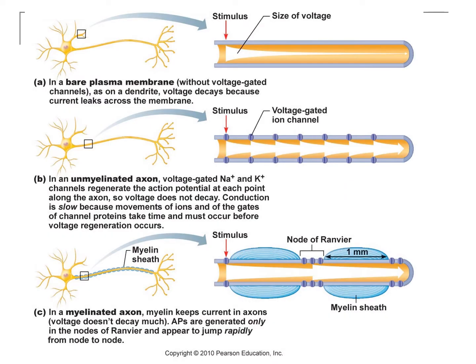The next thing to look at is how some of these potentials can spread. In a dendrite or cell body where you have graded potentials, you get a stimulus, but that stimulus doesn't get renewed — it fades away because sodium comes in at one specific point of the membrane, but that sodium entry won't get renewed. The voltage size just fades out. The voltage decays because current leaks across the membrane. Leakage channels are always trying to remove sodium ions, so if you don't renew the stimulus, it dies out over distance.